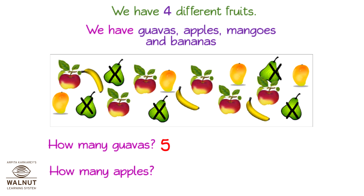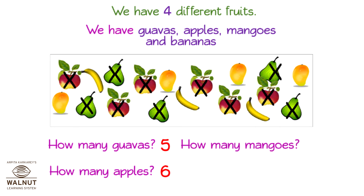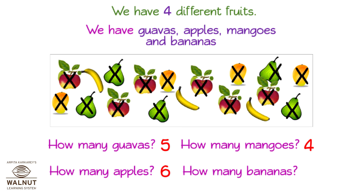How many apples? One, two, three, four, five, six. We have six apples. How many mangoes? One, two, three, four. We have four mangoes. How many bananas? One, two, three. We have three bananas.